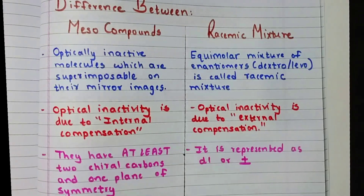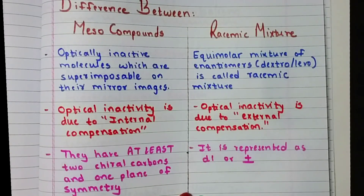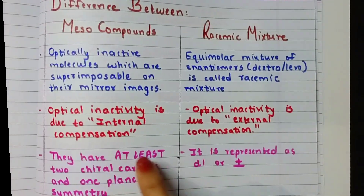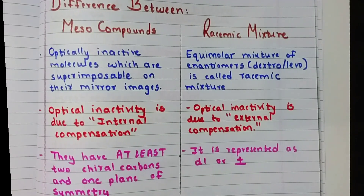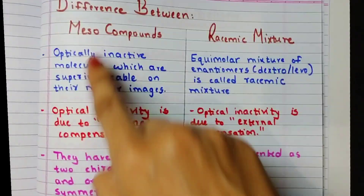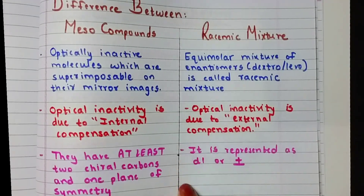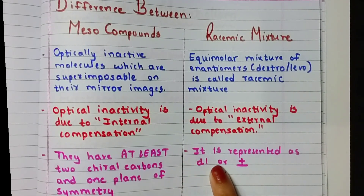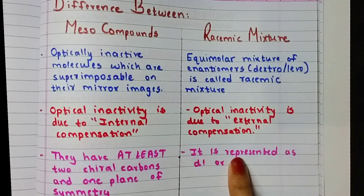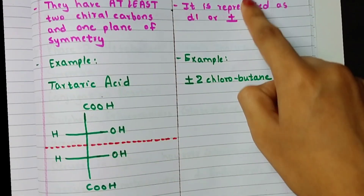The third point: meso compounds have at least two chiral carbons and one plane of symmetry. Racemic mixtures are represented as dextro-levo or with the plus-minus symbol.